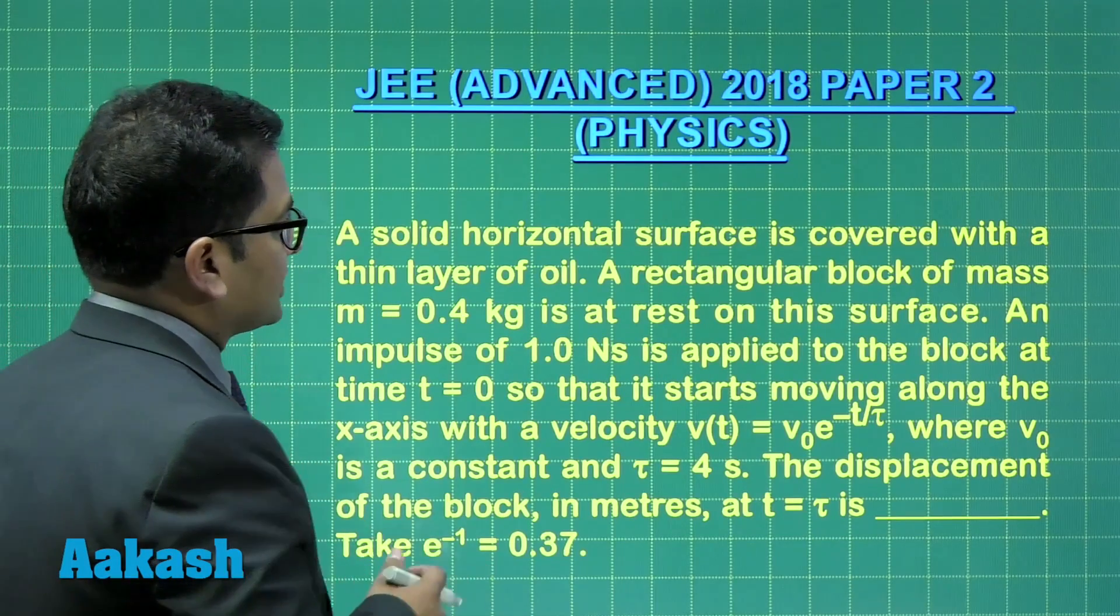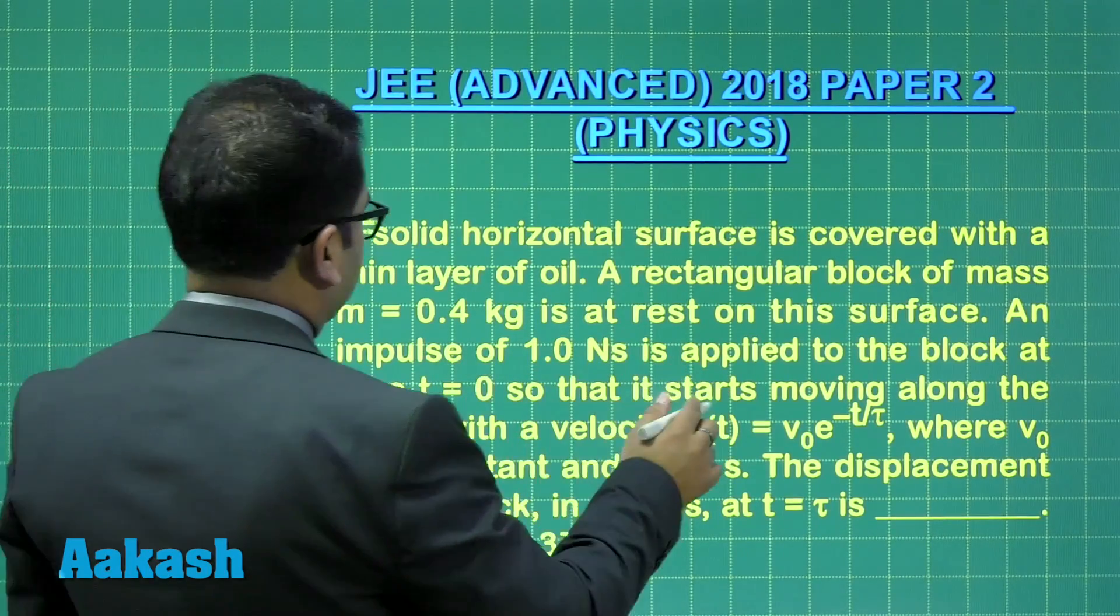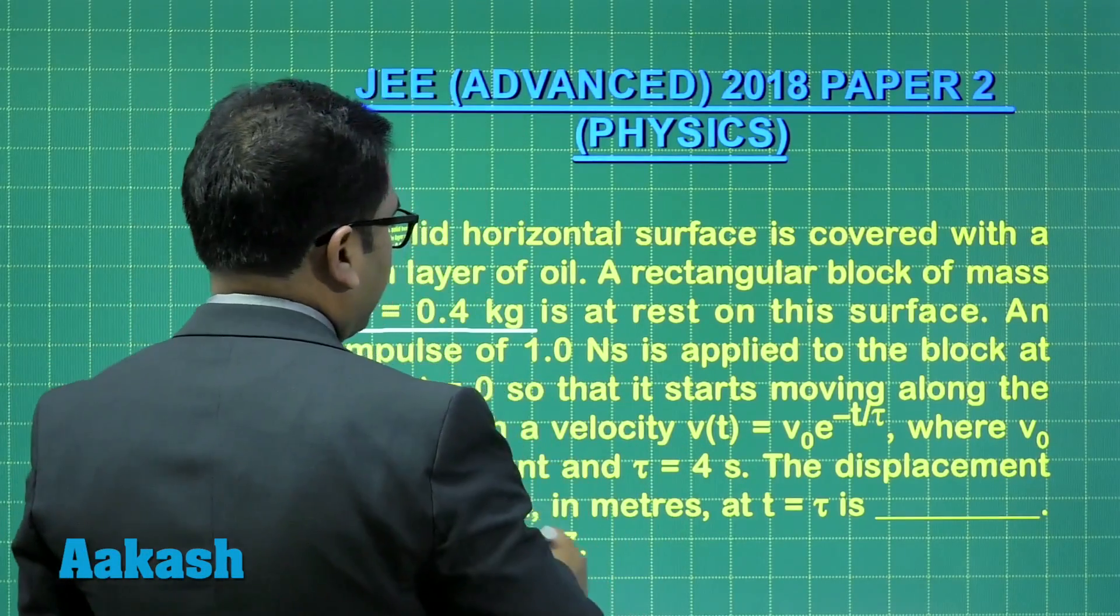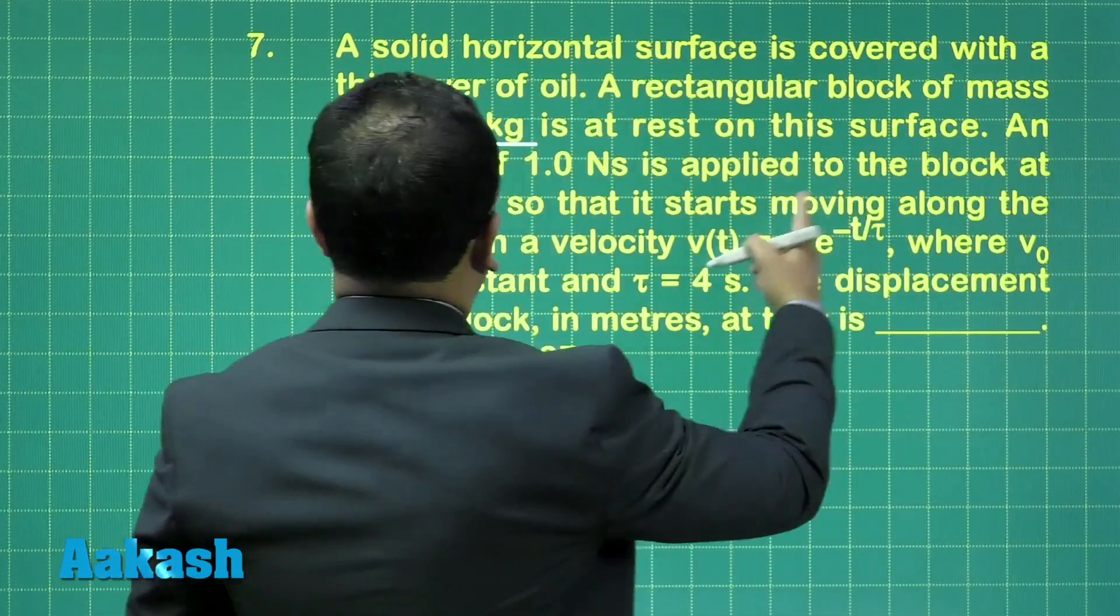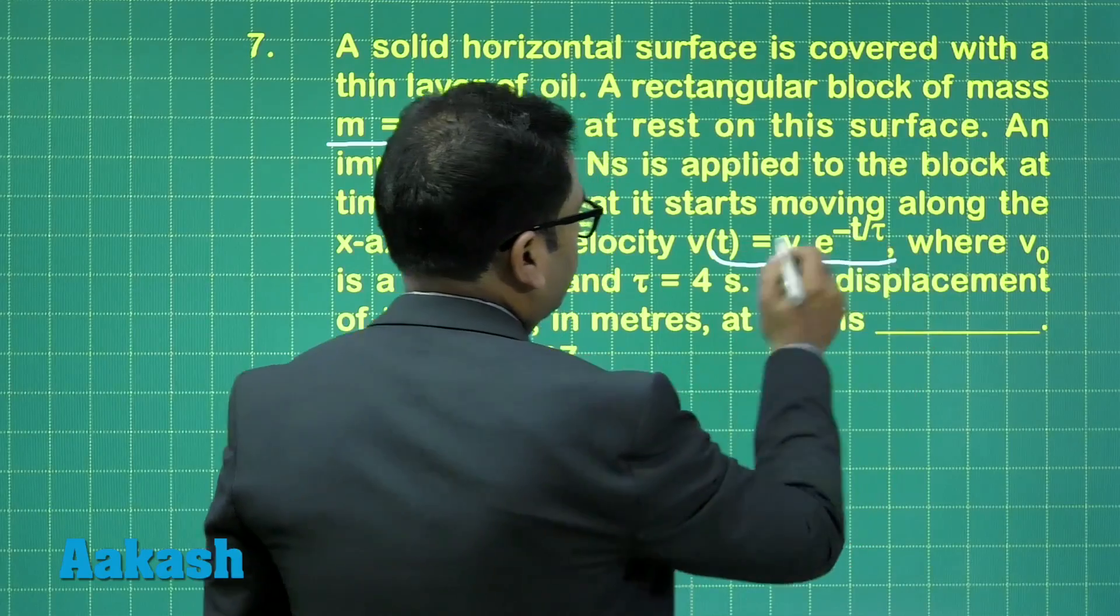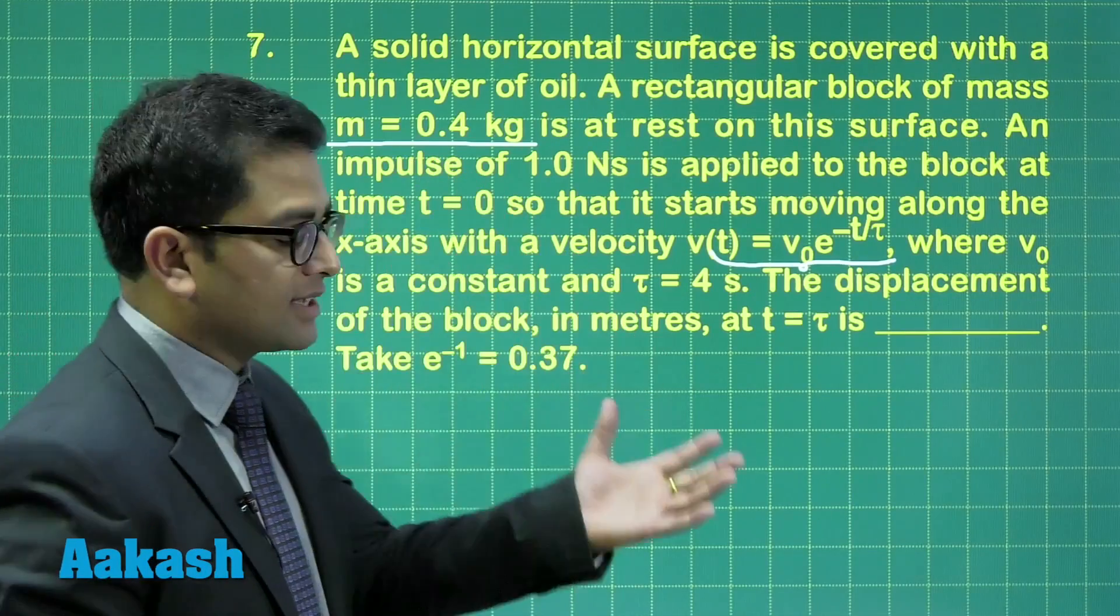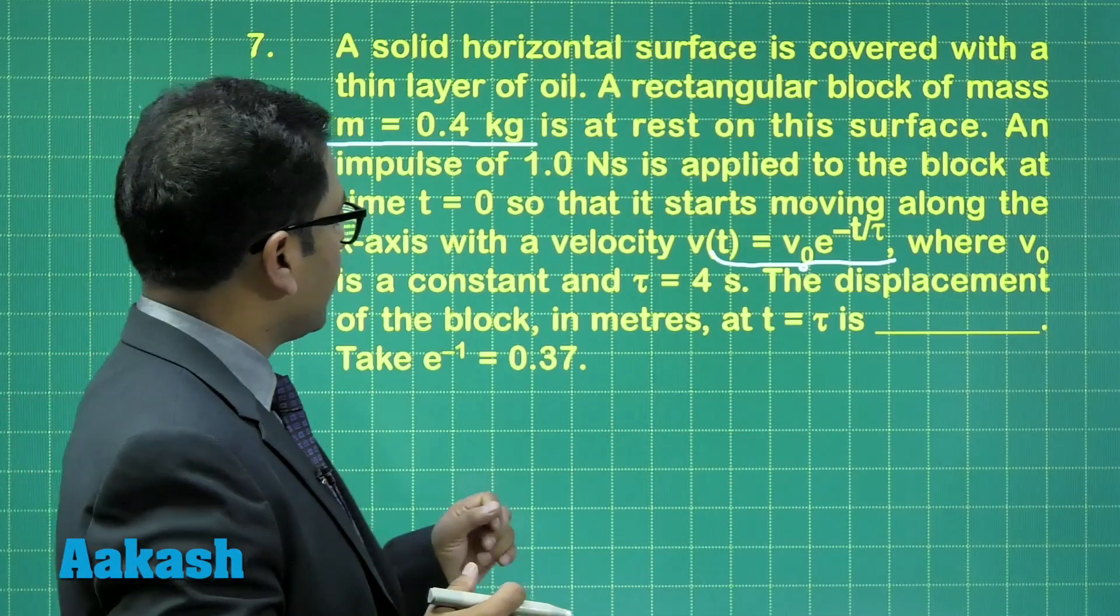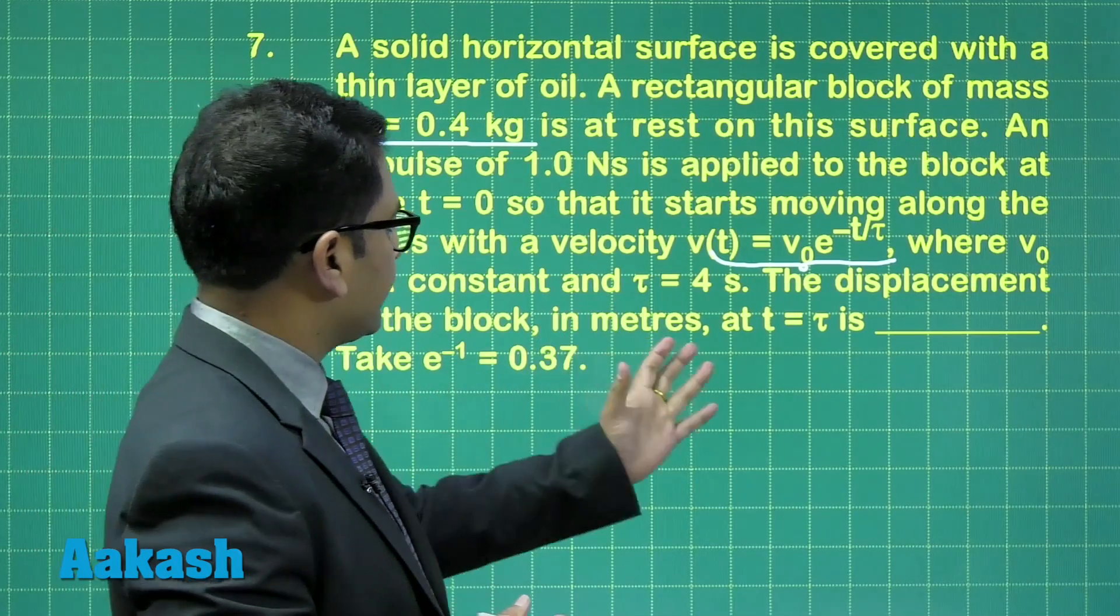Now here, a solid horizontal surface is covered with a thin layer of oil. That means now a viscosity is there. A rectangular block of mass 0.4 kg is at rest on this surface. An impulse of one Newton second has been applied to the block at time t equals zero, and it starts moving with this velocity. Notice, at t equal to zero, velocity is v₀. And with time, the velocity decreases exponentially, as expected when there is a viscous medium. And τ has been given, that's a constant.